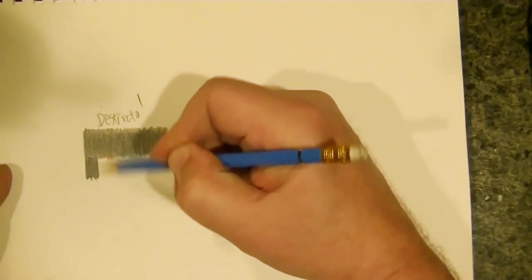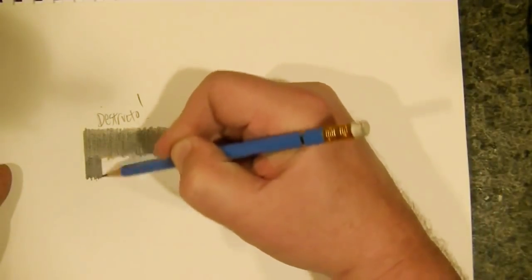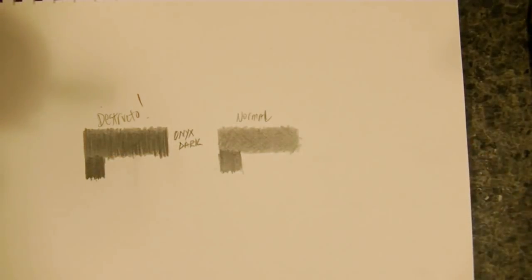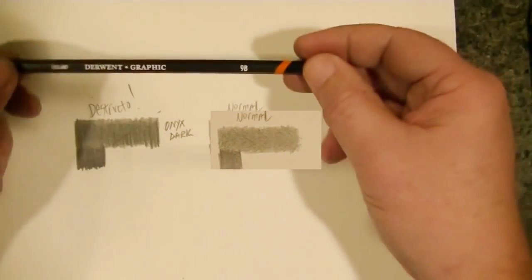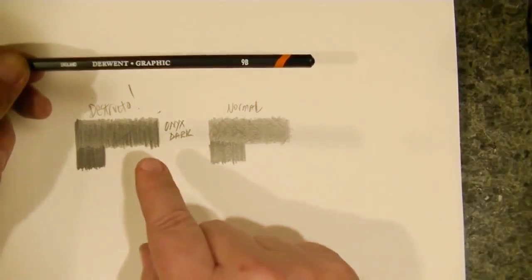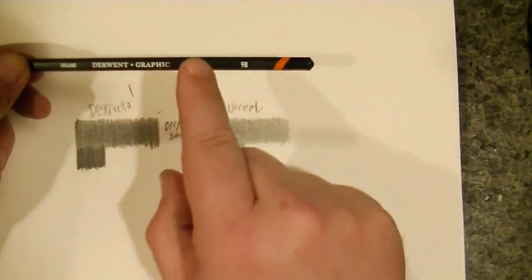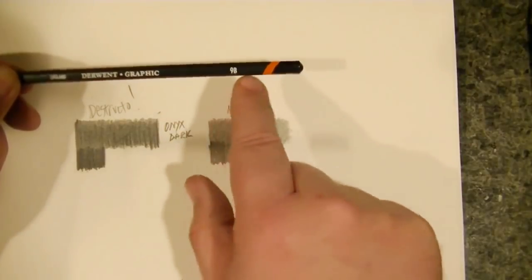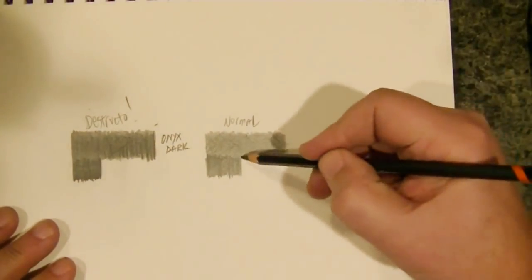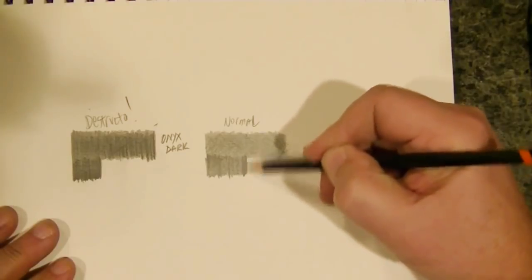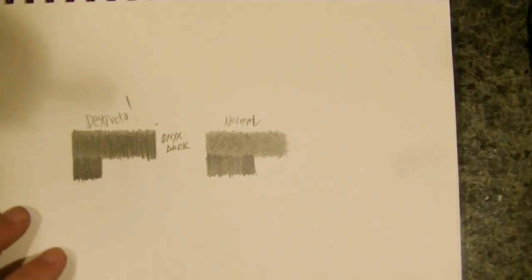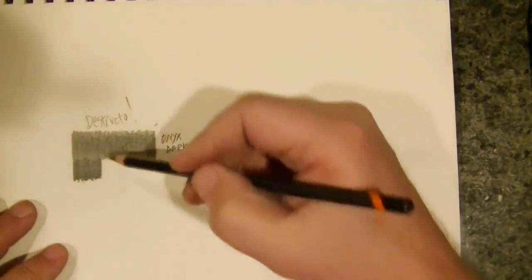And you can even hear the sound of how intense I am getting here. Look at that. HB pencil, guys. Look at that. 9B pencil, which they claim is not as dark as their Onyx dark. Their Onyx dark is darker than their 9B, that's what they said. Normal pressure. Yep, sure, that's a dark pencil. All right, destructo.